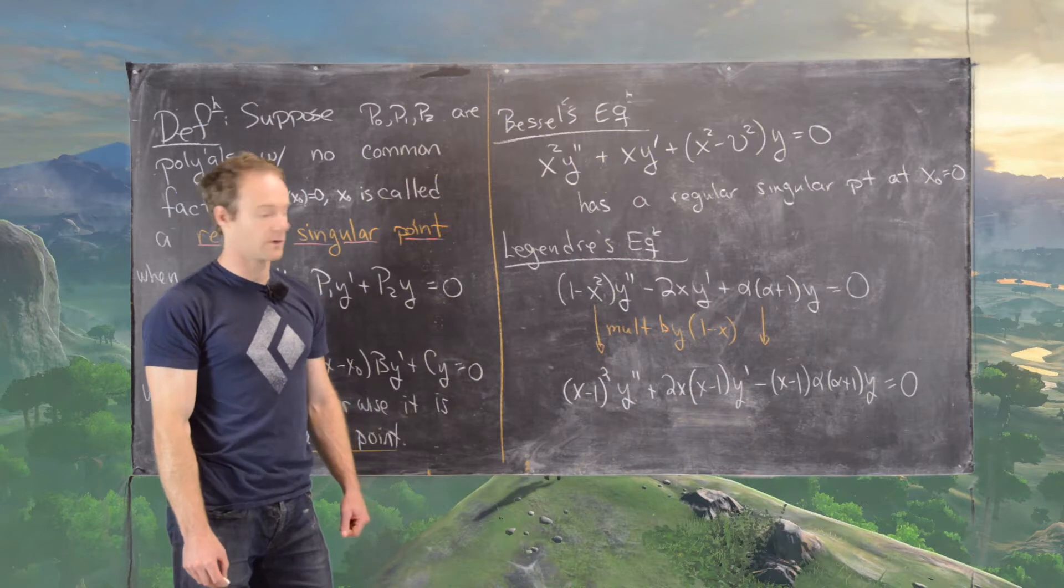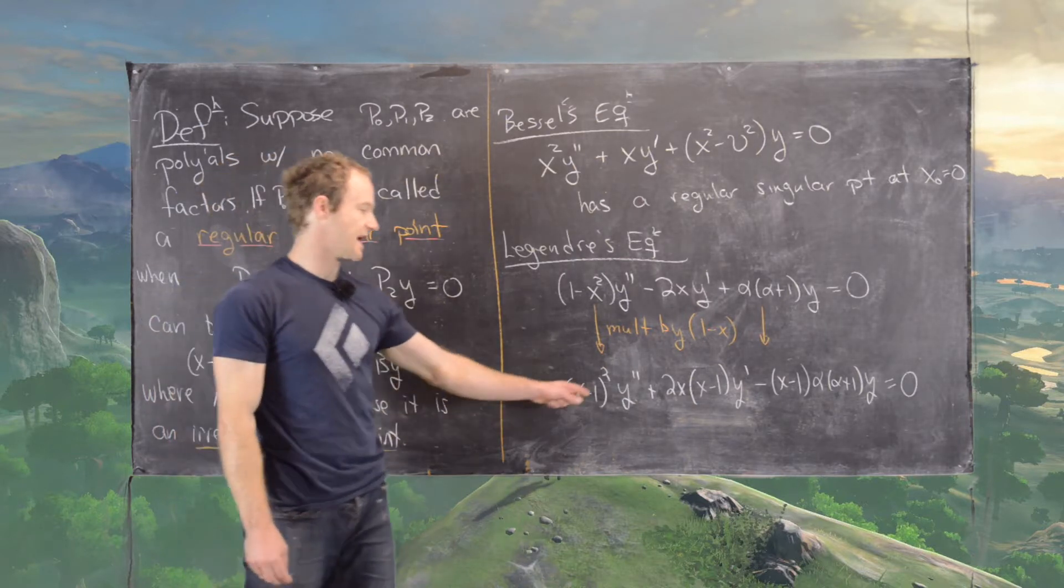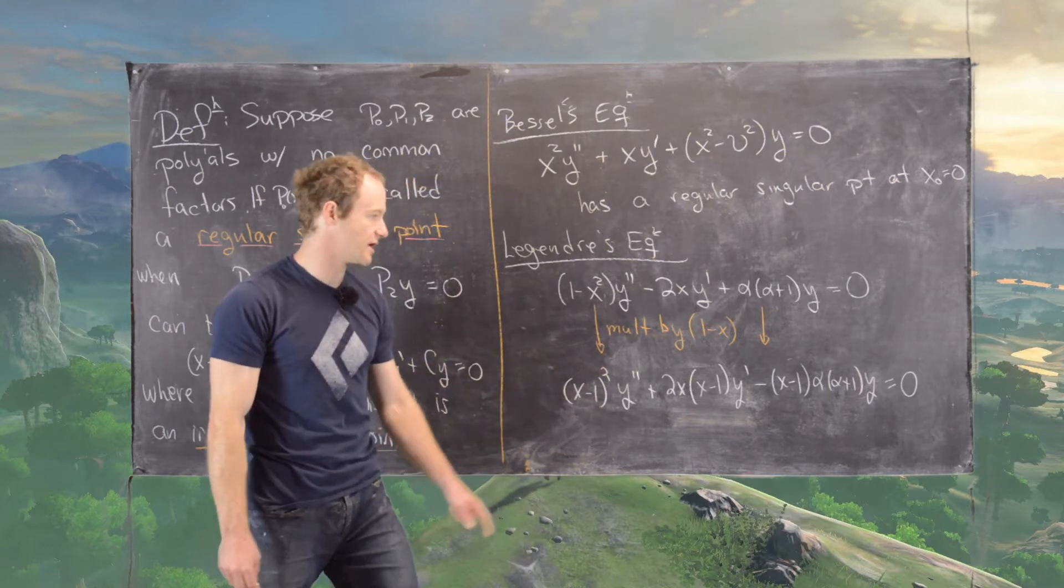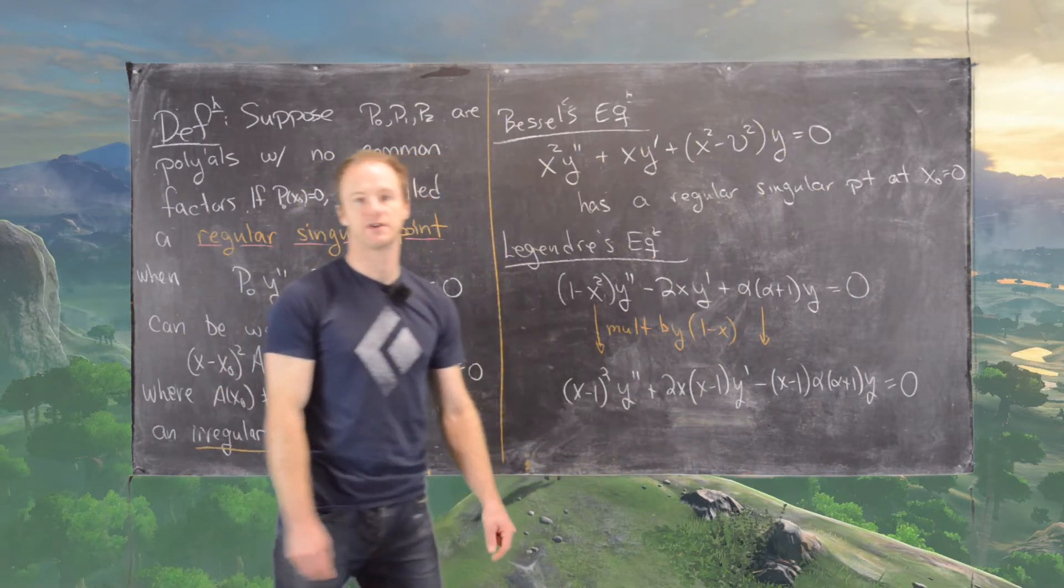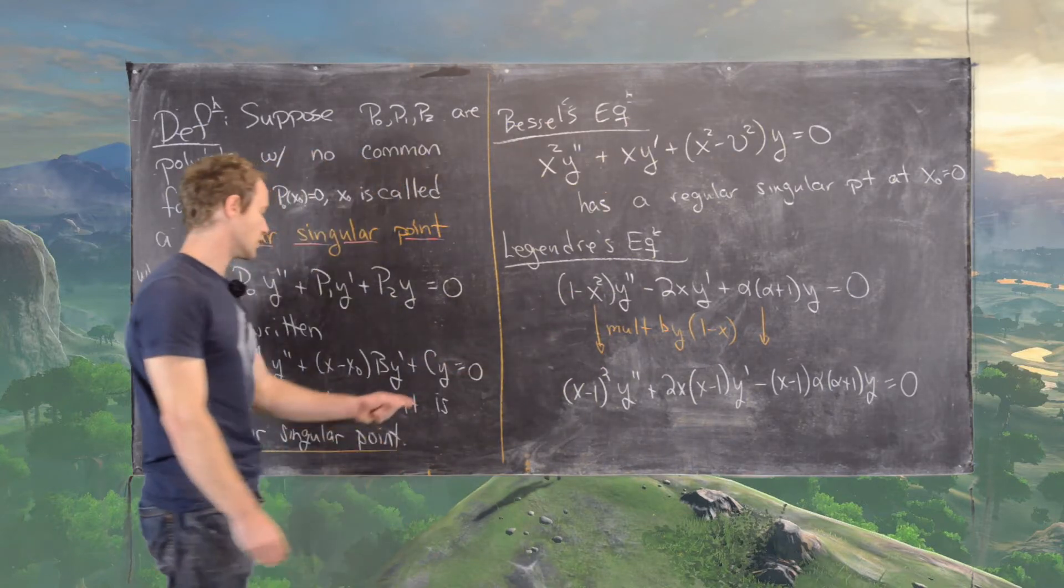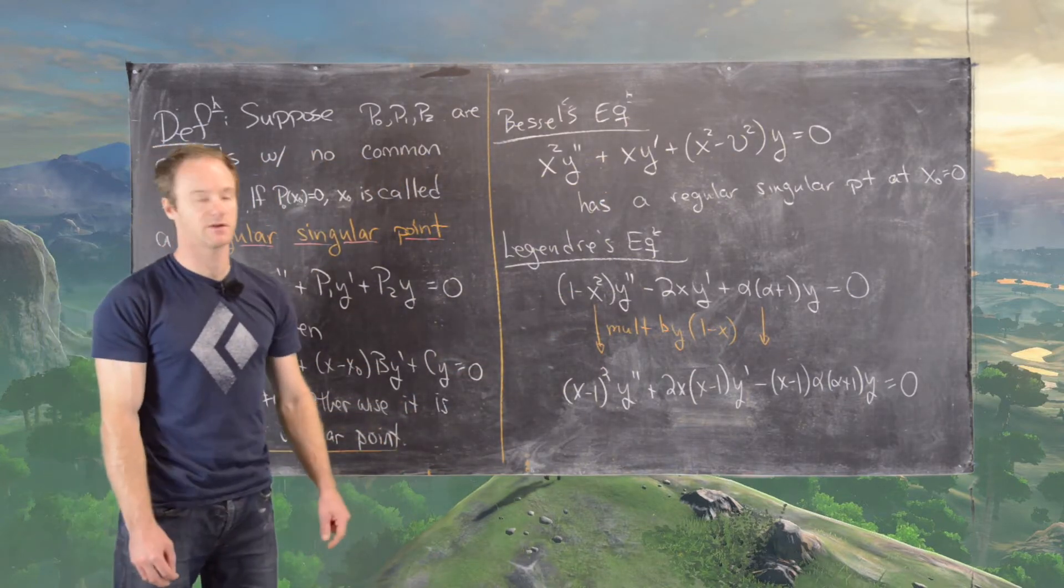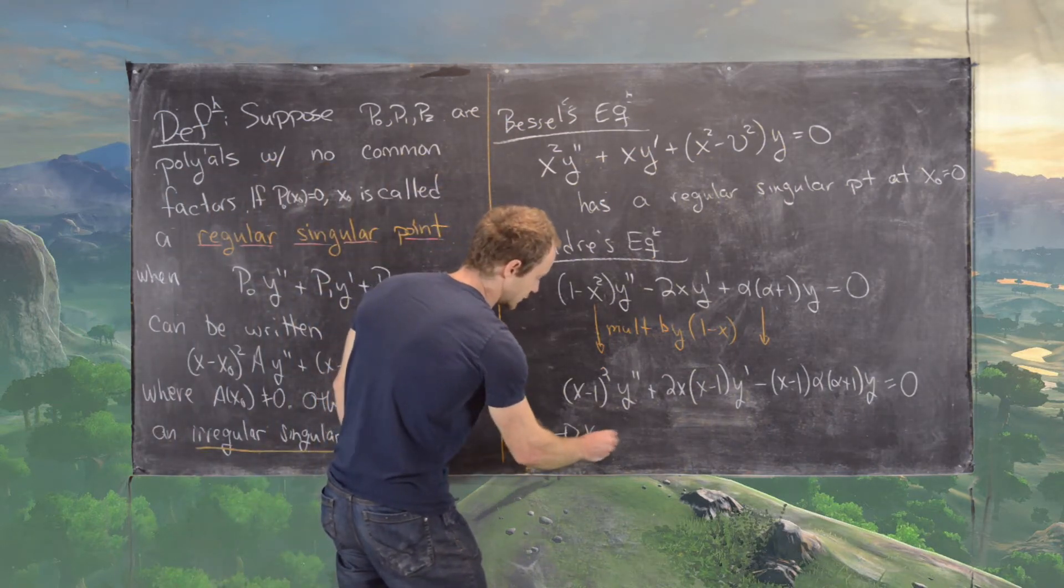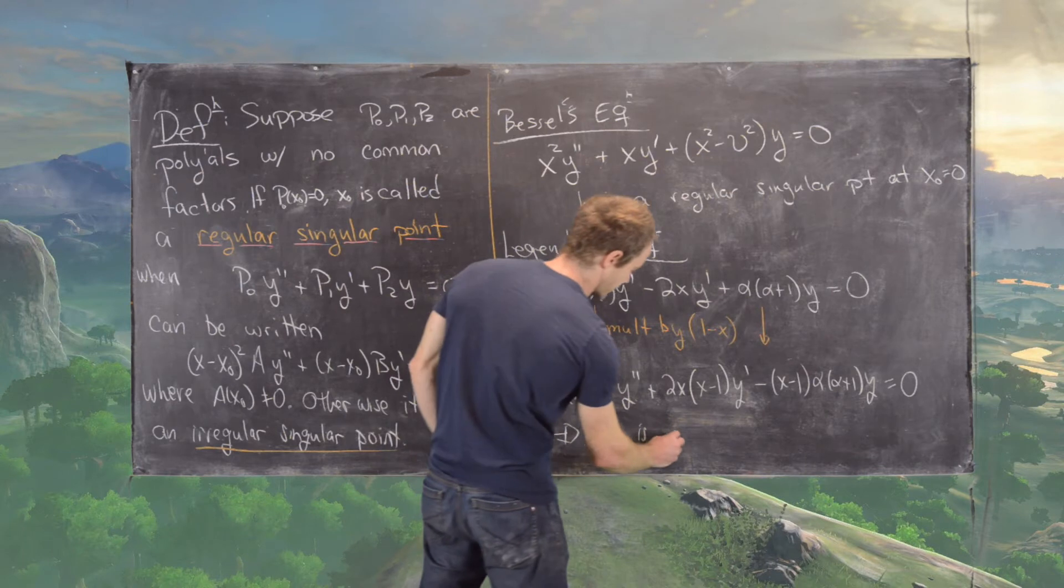Now we're in this form. Notice that we have a double root in the coefficient of y double prime at x equals 1, a single root in the coefficient of y prime when x equals 1, and there's no restriction on what's happening in the last polynomial. So that tells us that x equals 1 is a regular singular point.